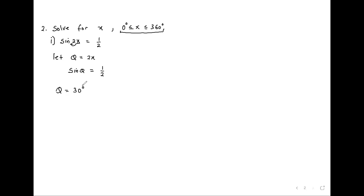Sine 30 is half — it's a special angle and we have a special angle table. Sine is also positive in the second quadrant, so we take 30 as a reference angle and look for an angle in the second quadrant whose reference angle is 30. In the second quadrant, theta equals 180 minus 30, which equals 150.